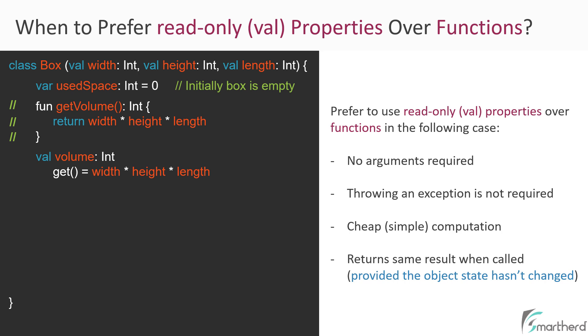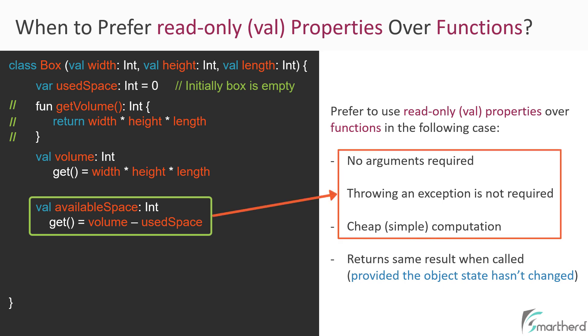Moving on, suppose we have another property such as available space. Its getter returns a value which is volume of the box minus used space. The volume of the box is like a constant value because the width, height, and length which computes the volume are declared using val keyword. But the used space is a variable property. Since it is var, its value can change anytime in future. As per the rule, our code, which is this property declaration along with the getter, the first three rules are met by our property, but the last one is not met.